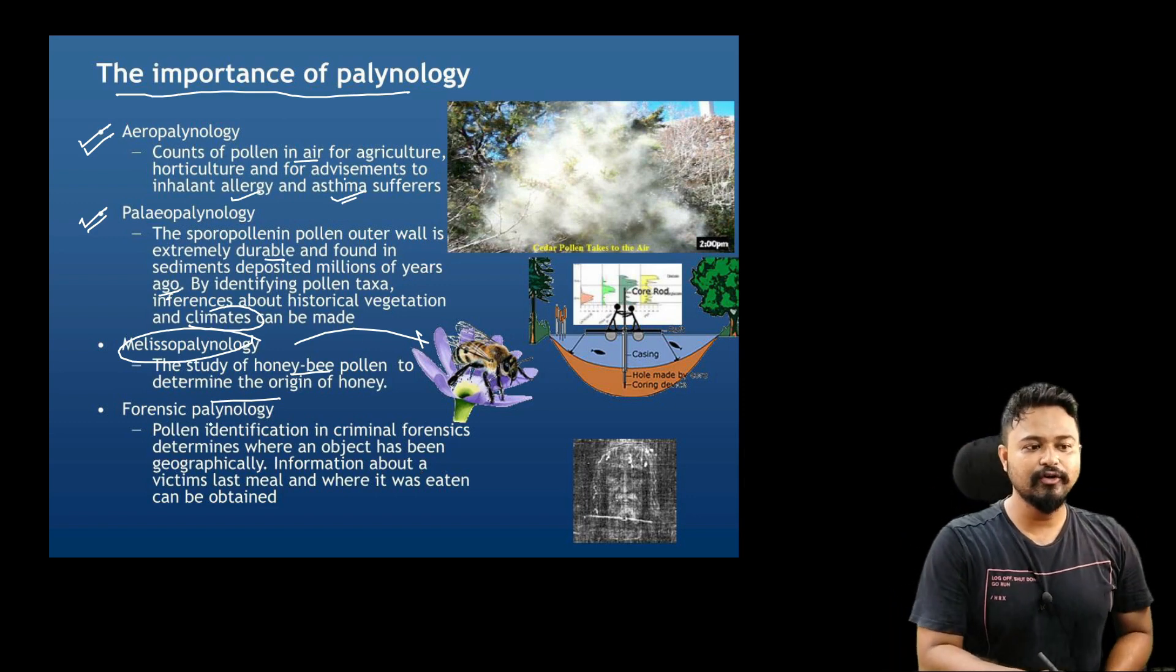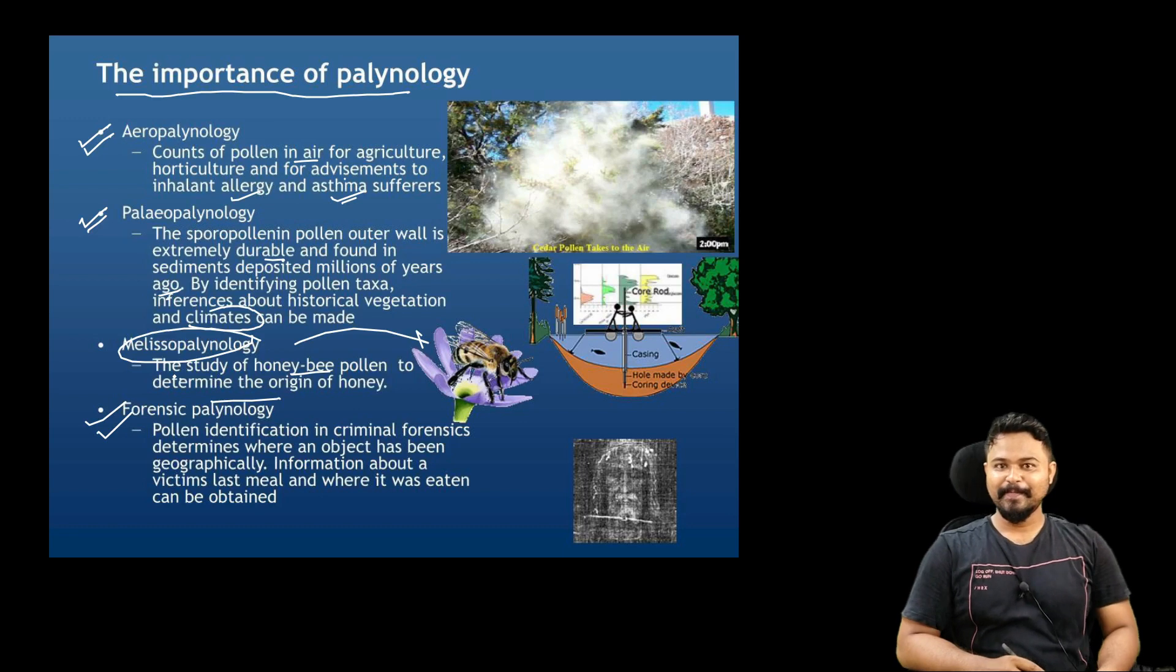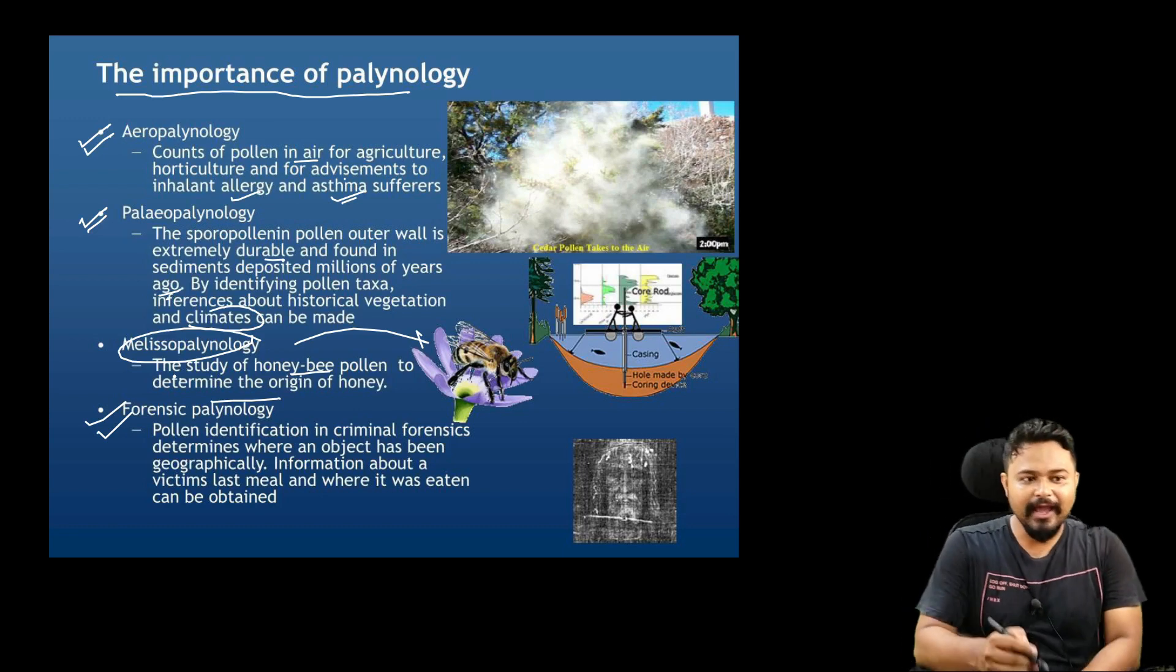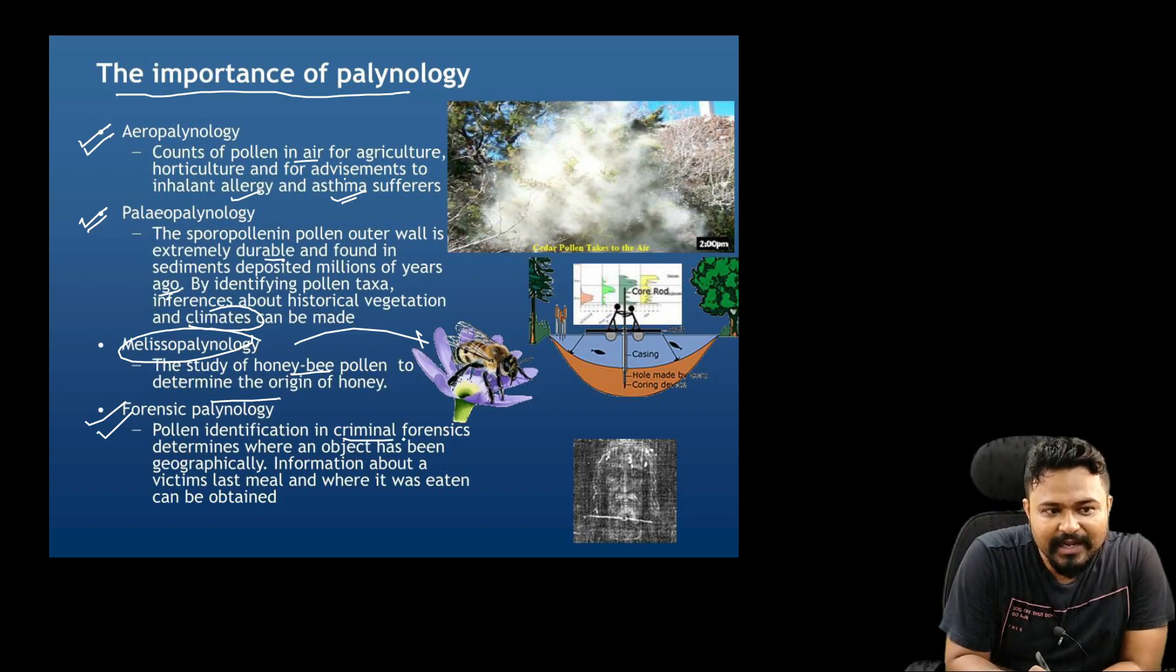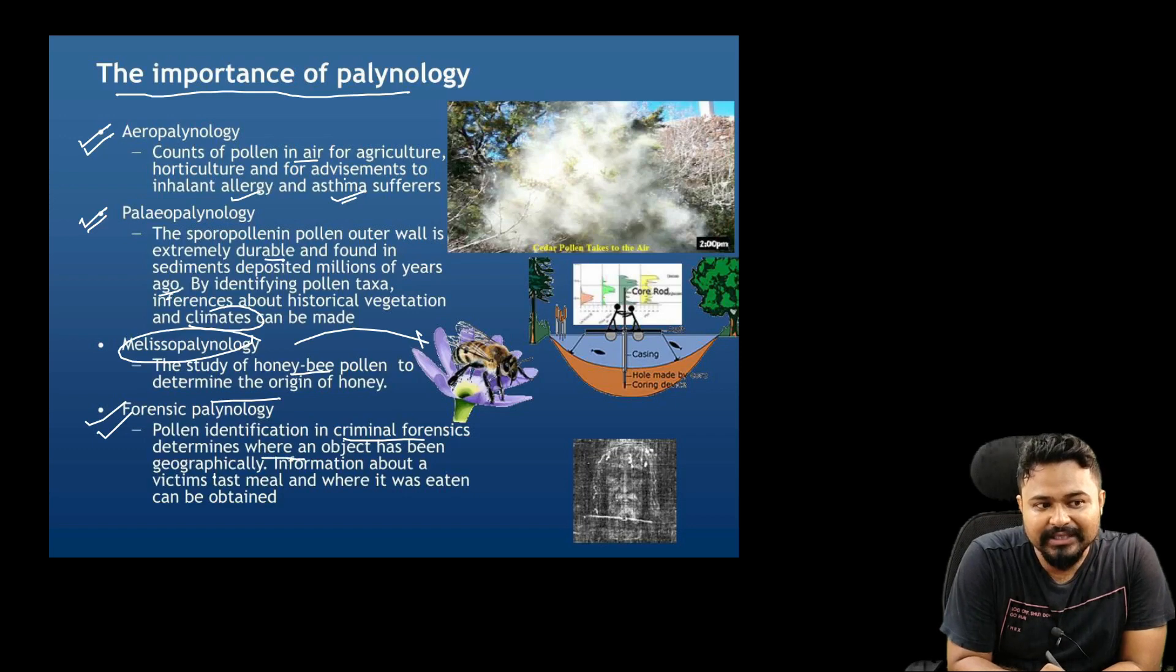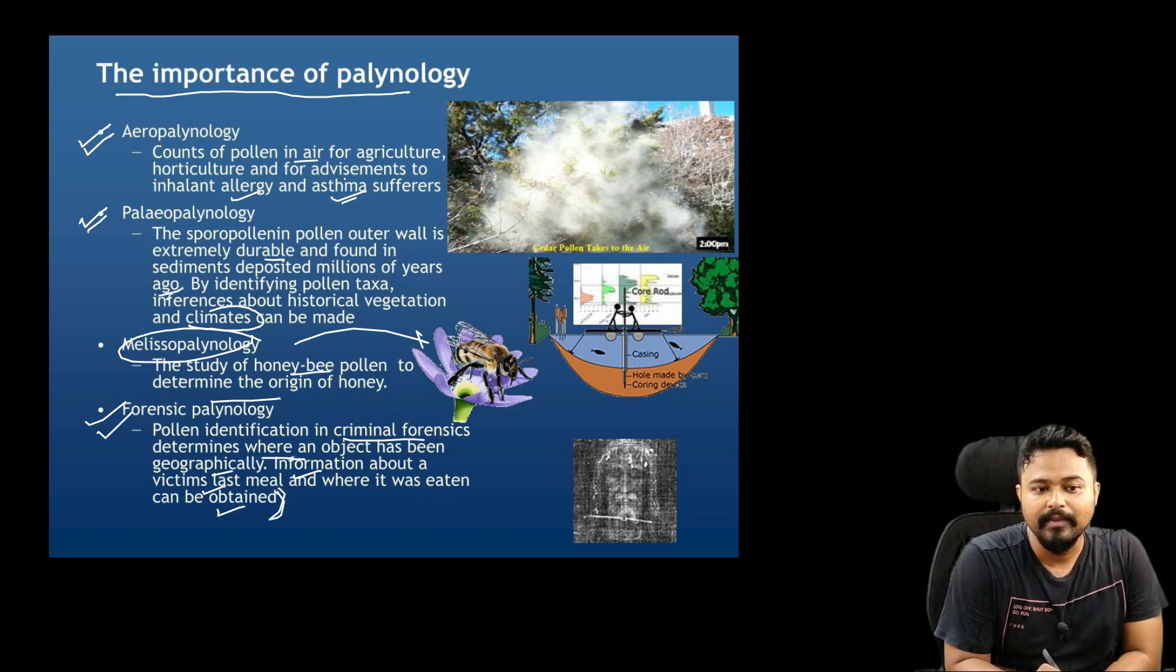Forensic palynology: pollen identification in criminal forensics determines where an object has been geographically. Information about a victim's last meal and where it was eaten can be obtained.